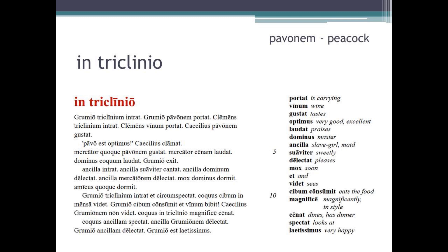Ancilla dominum delectat — the slave girl pleases the master. Ancilla mercatorem delectat — the slave girl pleases the merchant. Mox dominus dormit — soon the master sleeps. Amicus quoque dormit — the friend also sleeps. Grumio triclinium intrat et circumspectat — Grumio enters the dining room and looks around. Coquus cibum in mensa videt — the cook sees food on the table. Grumio cibum consumit et vinum bibit — Grumio eats the food and drinks the wine. Caecilius Grumionem non videt — Caecilius does not see Grumio.